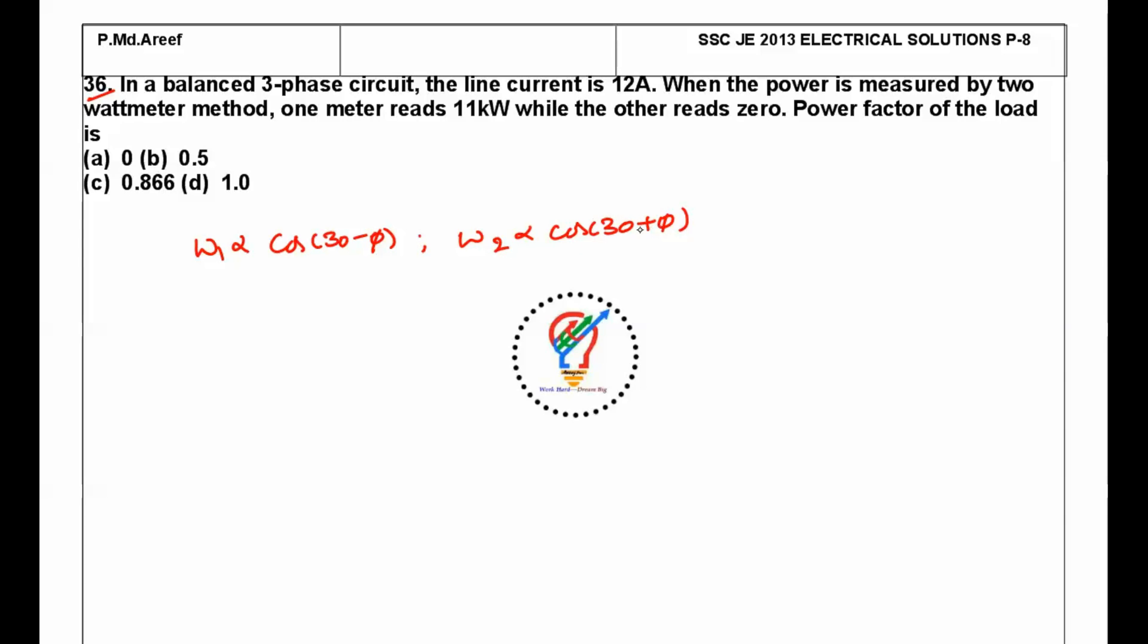So one wattmeter reads 11 kilowatts, another wattmeter reads zero. At what phase angle φ does one wattmeter reading become zero? φ is 60 degrees, which makes the W2 wattmeter reading zero. So what's the power factor? Power factor is cos φ, which is cos 60°, which is 1 by 2, so 0.5 is the answer.